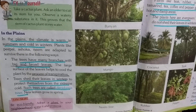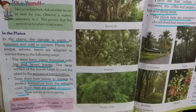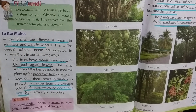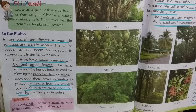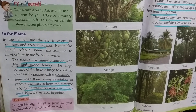Such trees are called deciduous trees. They shed their leaves in winters to protect themselves from the extreme cold. For example: peeple, banyan, mango, and neem tree.